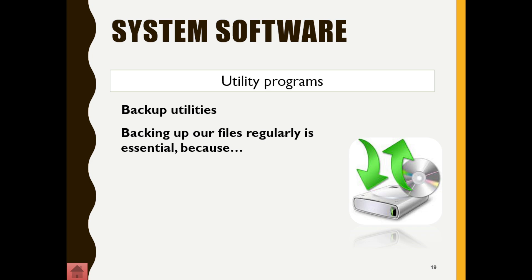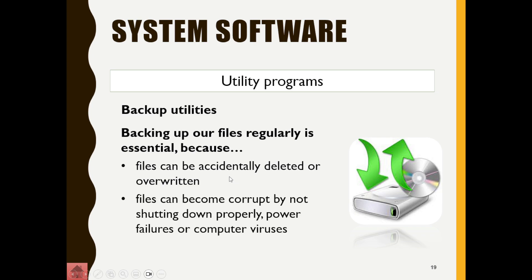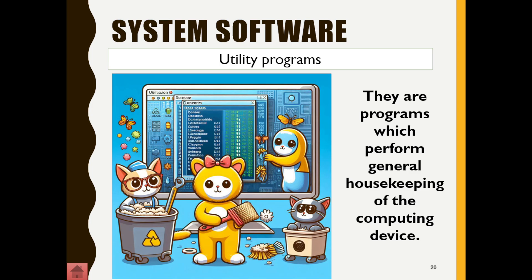There are also backup utilities, where I back up my files regularly. The reasons to do this include: files can be accidentally deleted or overwritten, files can become corrupt from not shutting down the PC correctly, the PC could have a power failure, or you could have a virus. So you want to practice good backup policies. These utility programs perform general housekeeping and are built into the operating system itself.